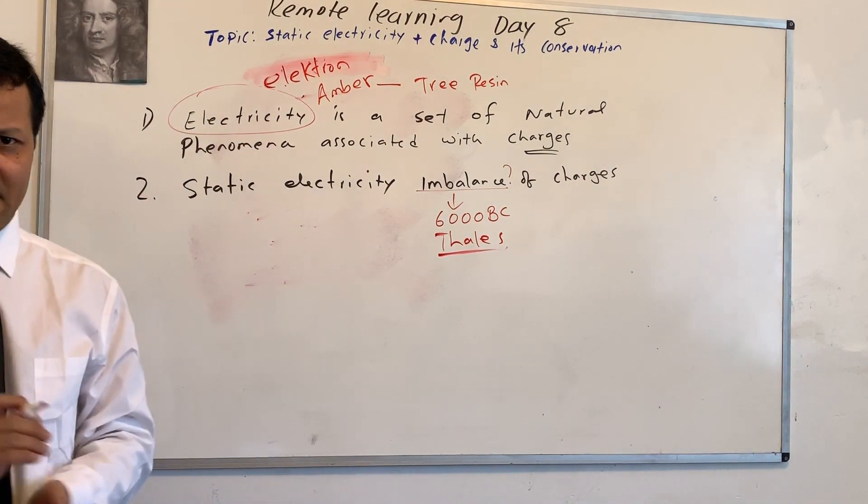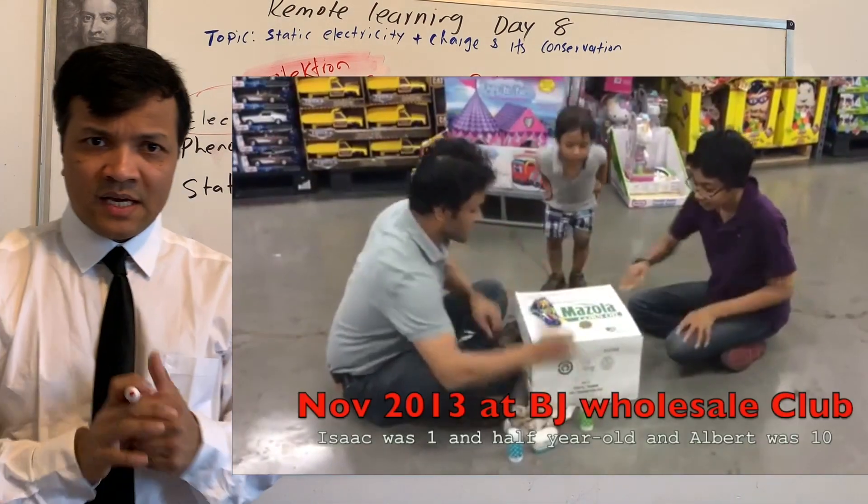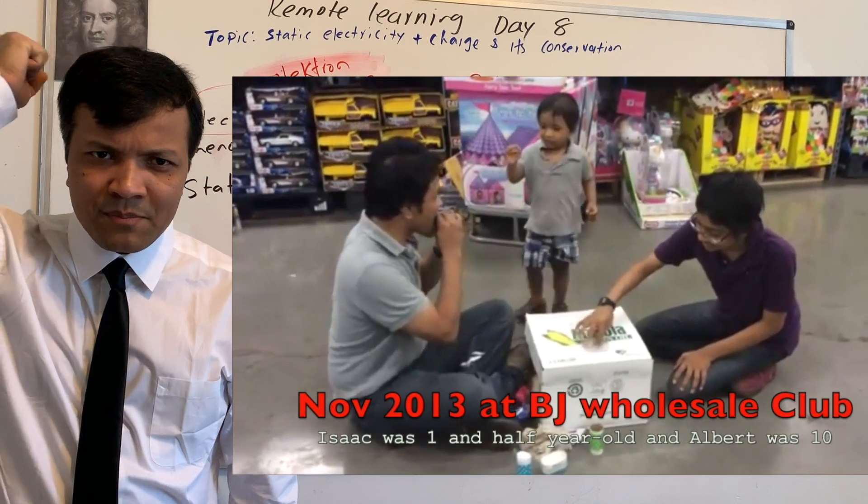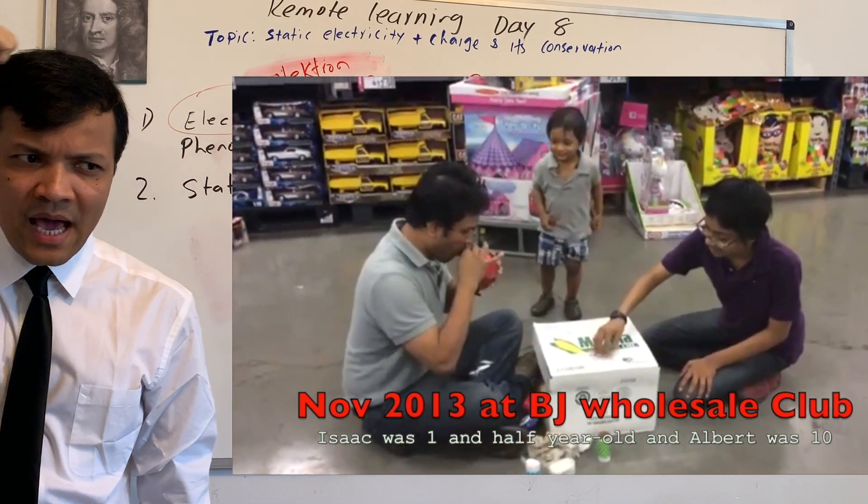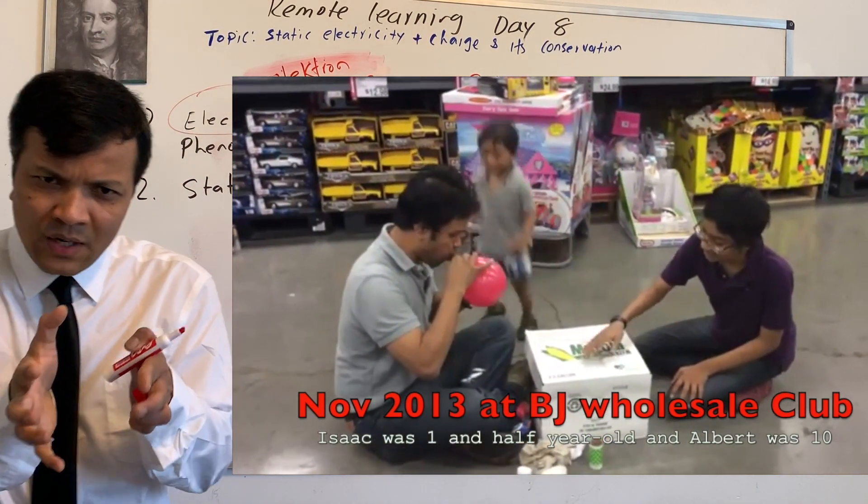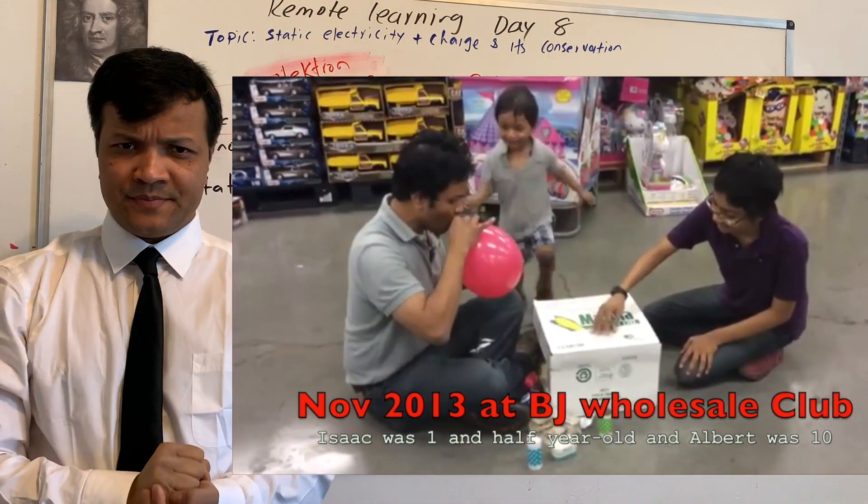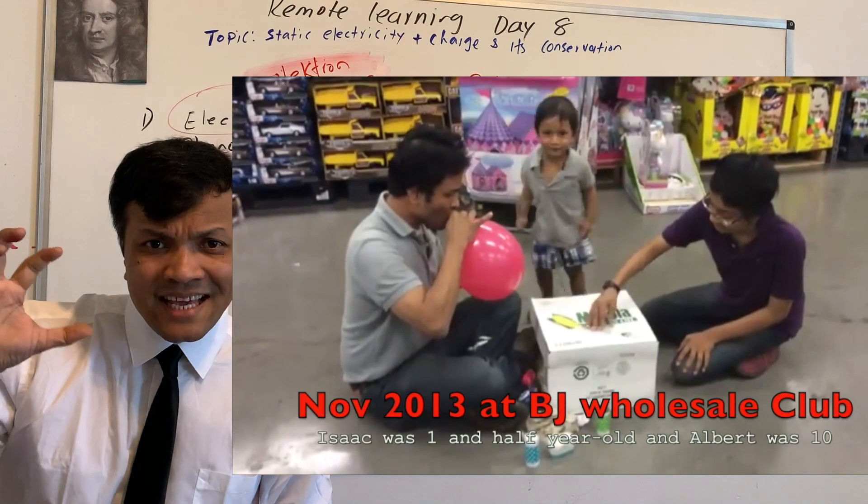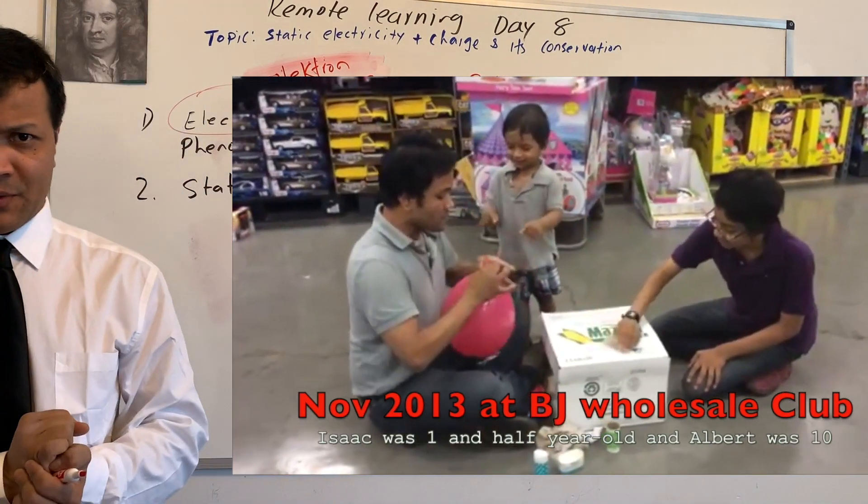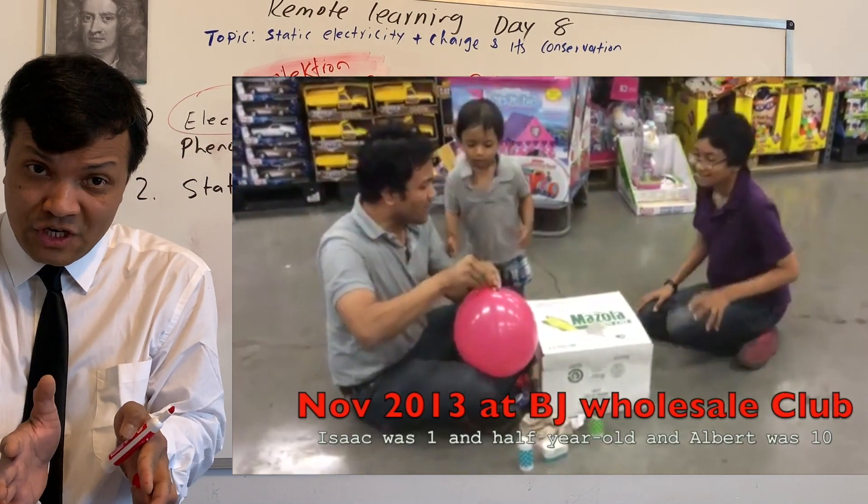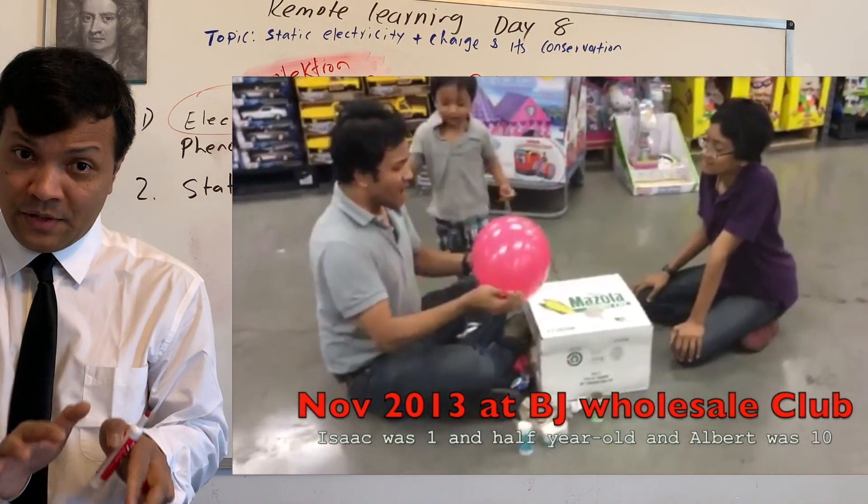Now we can do it differently. You can do it with a balloon. If you take a balloon and if you rub the balloon against your hair, what would happen? The balloon will pick up all the negative charges from your hair, creating the imbalance of charges on the balloon.